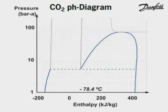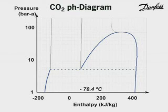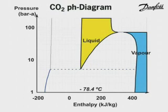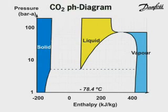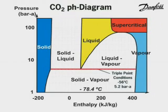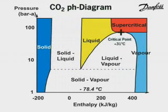Here is the triple point and here is the critical point on the phase diagram. For refrigeration purposes, the pressure-enthalpy diagram is commonly used. For CO2 applications, this diagram has to be extended so that the solid and supercritical phases are included. The coloured areas indicate the different phases of CO2, namely vapour, liquid, solid and supercritical. The triple point is here and the critical point is here.